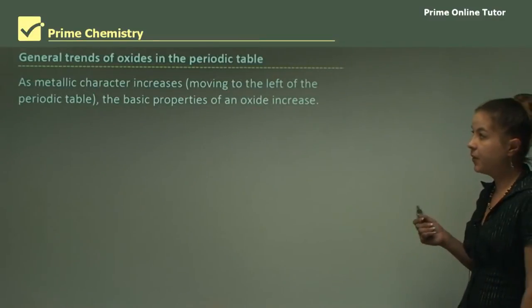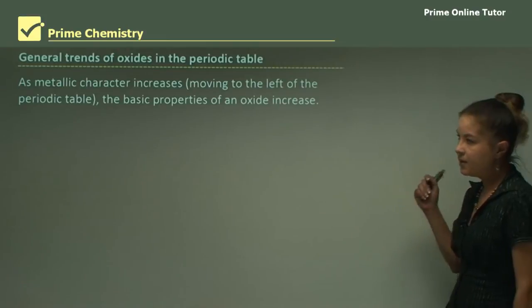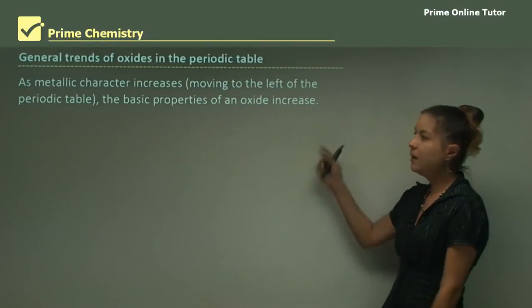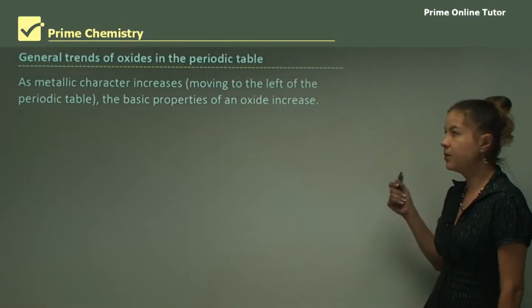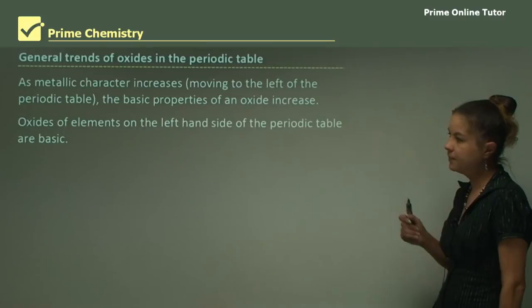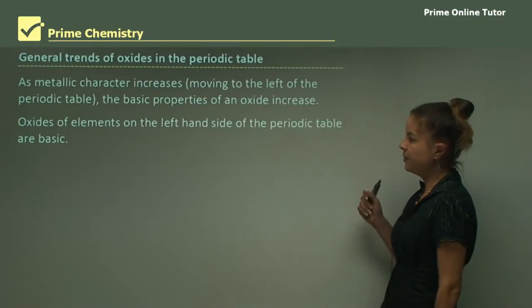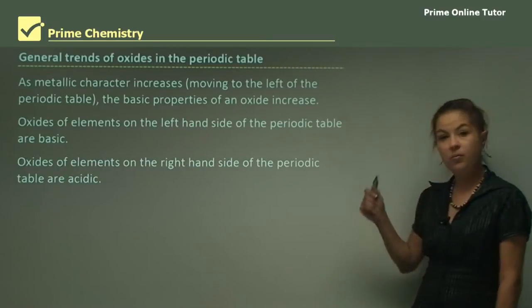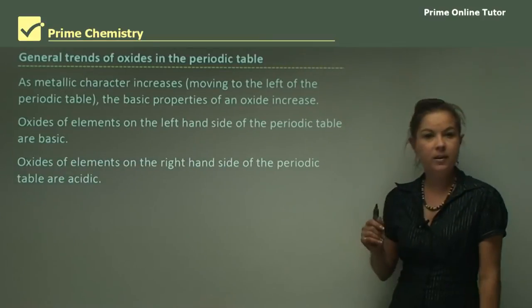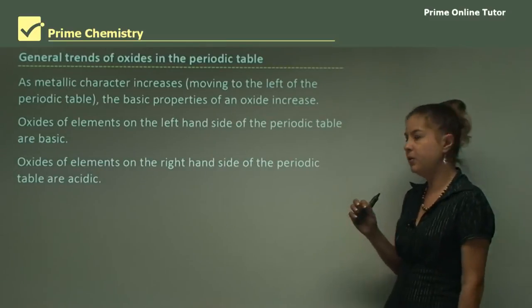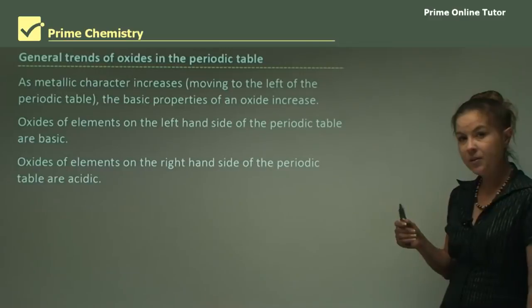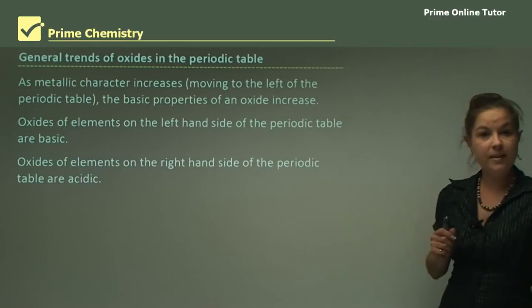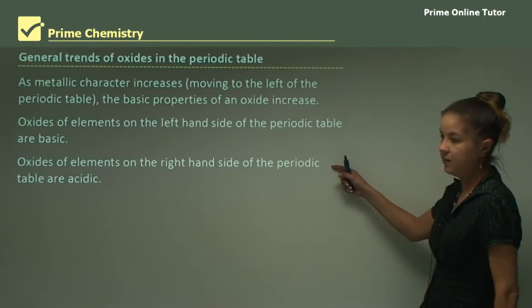Looking at general trends over the periodic table, as the metallic character increases, moving to the left of the periodic table, the basic properties of an oxide will increase. Oxides of elements on the left are basic and oxides on the right are acidic, though some can be amphoteric and some can be neutral. In general, to the left you think basic, to the right you think acidic.